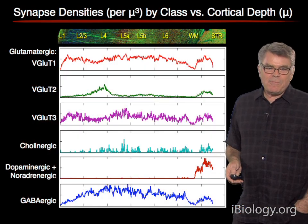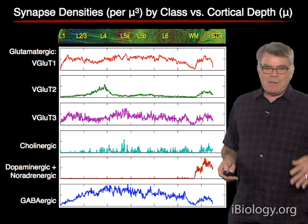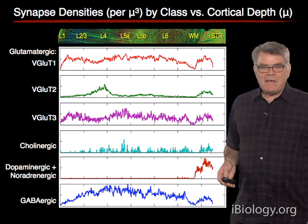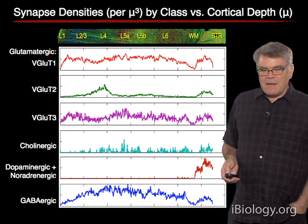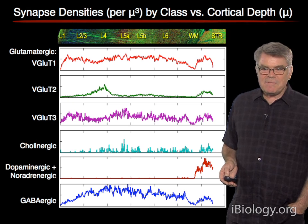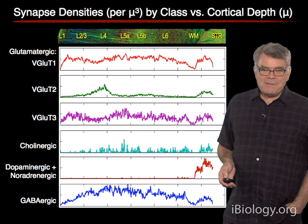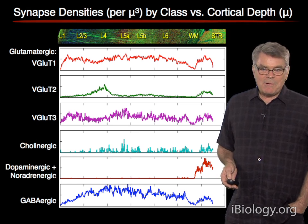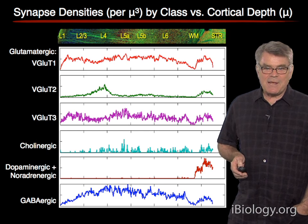Here's the results of an analysis based on a classification scheme: this simply reports numbers reflecting the densities of different types of synapses at different depths within the cortex. These curves are actually based on the analysis of a million or so synapses. It's a good thing we have computer algorithms to help us go through and count and classify and analyze all of those synapses.